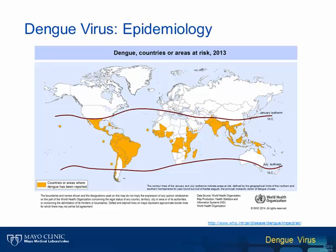With regards to dengue virus infections in the United States, the vast majority of cases are acquired during travel to endemic regions. However, Aedes species mosquitoes are endemic in the United States, and prior outbreaks have been recorded in southern states including Texas and Florida, so the potential for additional outbreaks and further dissemination of dengue into the continental U.S. is not insignificant.